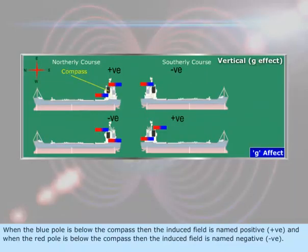When the blue pole is below the compass, then the induced field is named positive. When the red pole is below the compass, then the induced field is named negative.